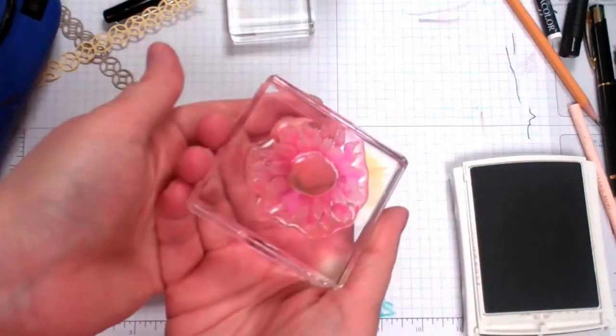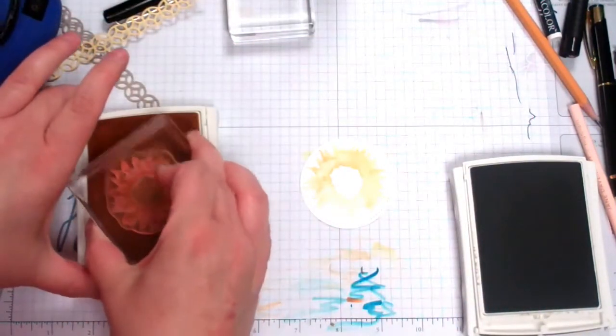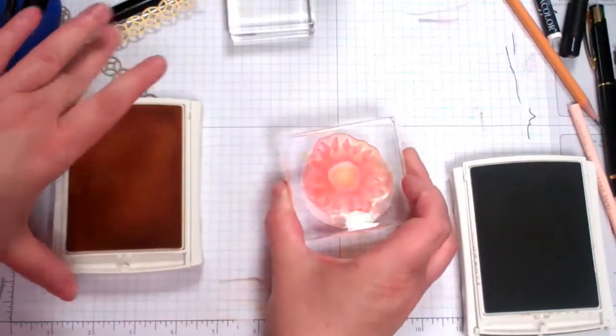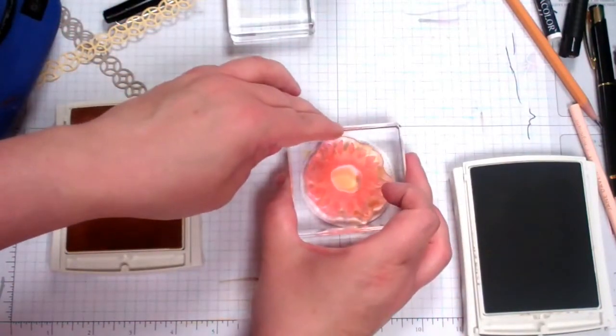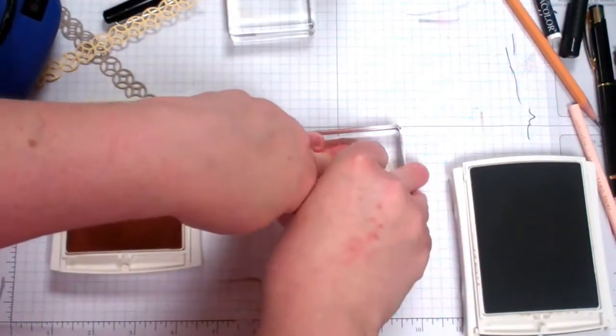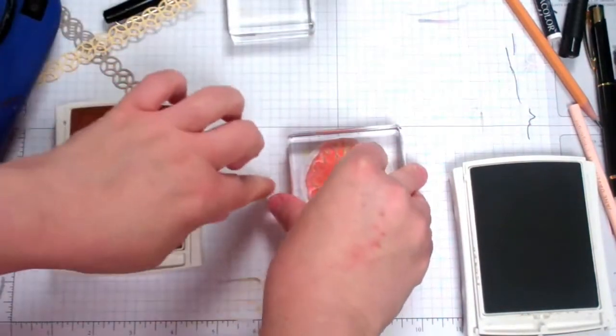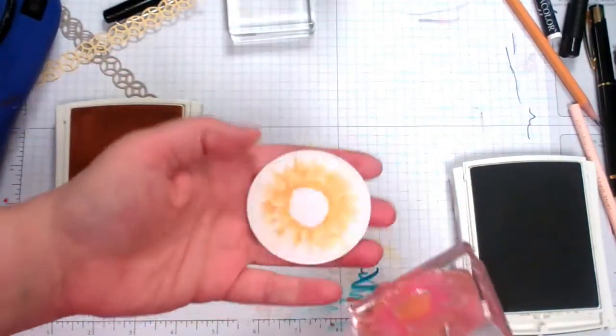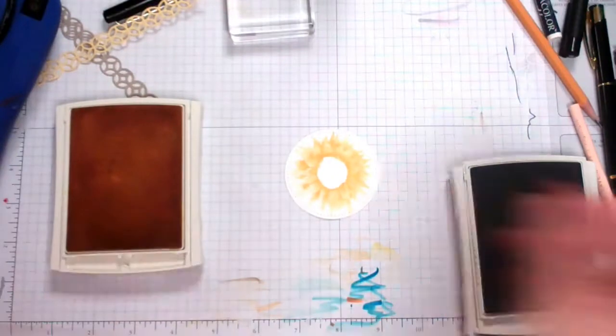Then we're going to take the more detailed stamp and go in with that one in the exact same color. You don't really need to line them up. Just line up the center. I think you'll be fine. That adds a nice layer of detail. That kind of gives it dimension.